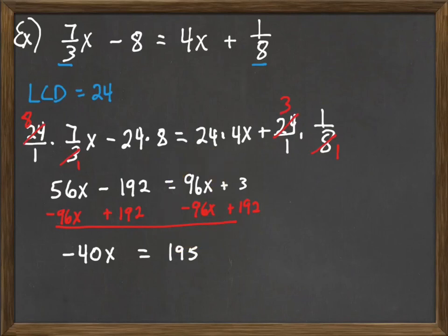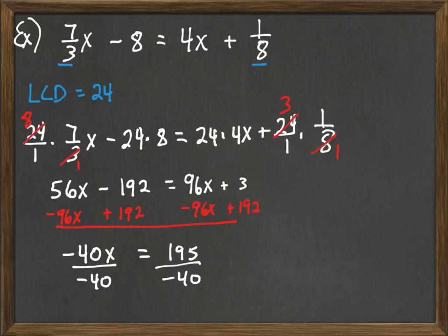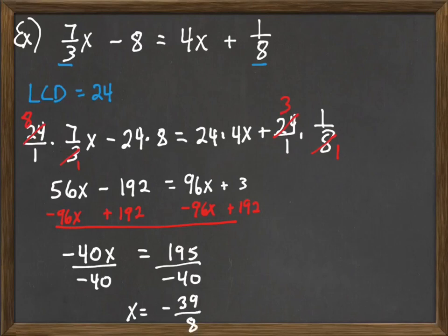At this point we're almost done. We need to get rid of the negative forty, so we divide both sides by negative forty. We have a little simplifying to do with one ninety-five over negative forty. Because of the one negative, we're going to have a negative answer. Five goes into both one ninety-five and forty: one ninety-five divided by five is thirty-nine, and forty divided by five is eight. So our answer is negative thirty-nine over eight.